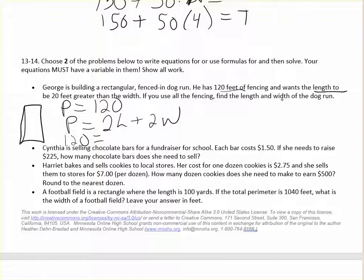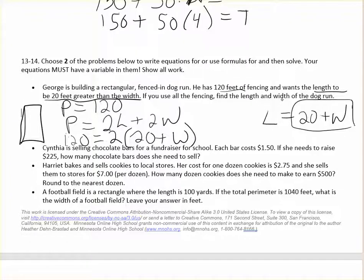Now we can replace p with 120. And we also have some more information here. He wants the length to be 20 feet greater than the width. Let's write that. Length, let's write it in symbols, to be equal to 20 feet greater than, that means plus, the width. So when I see an l, I'm going to replace it with this expression, 20 plus w. So the perimeter of the whole thing has to be 120. I replaced p with 120. 2 times l, but l is 20 plus w. And then plus 2w.